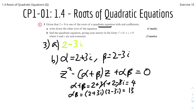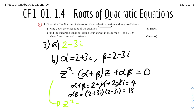Now we can put it into the quadratic equation. It will be z squared minus 4z — since alpha plus beta is 4 — plus 13, since alpha times beta is 13. So the quadratic equation is z squared minus 4z plus 13 equals 0.